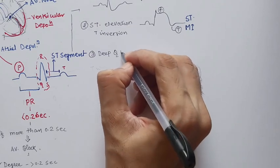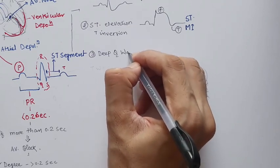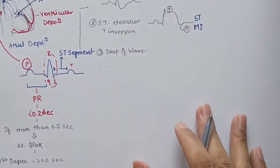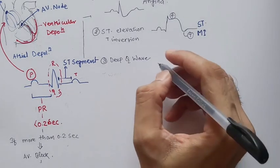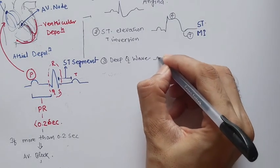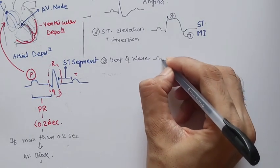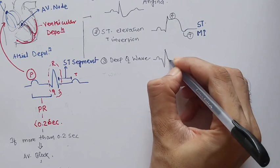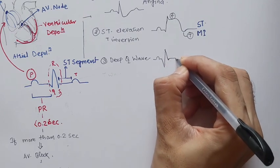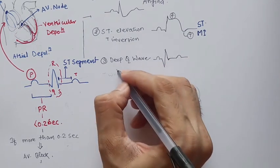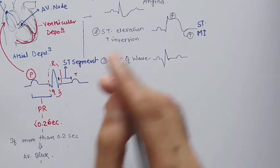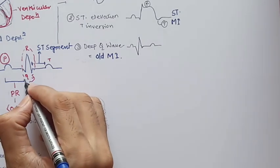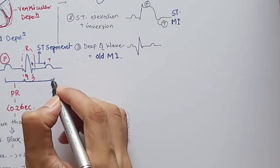Deep Q wave represents a unique case — old myocardial infarction. When we find such a deep Q wave in the ECG, we can identify it as a case of old myocardial infarction.